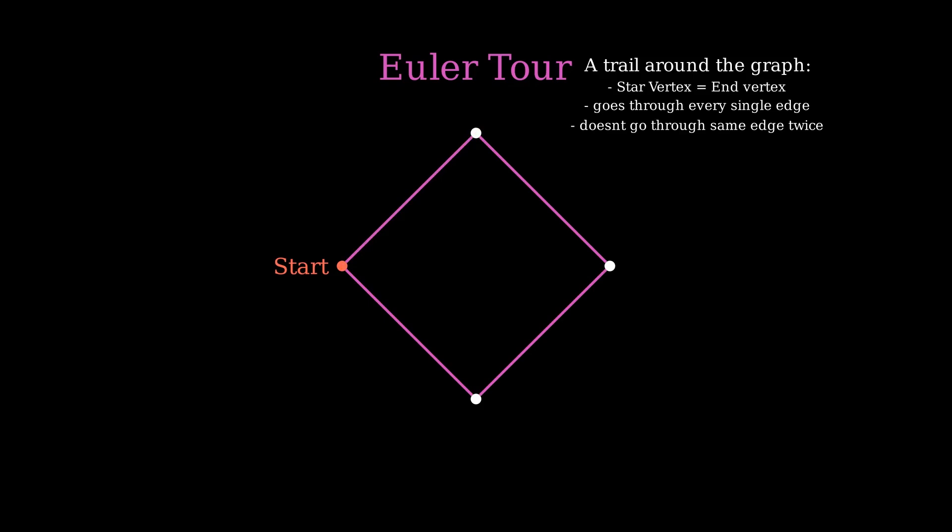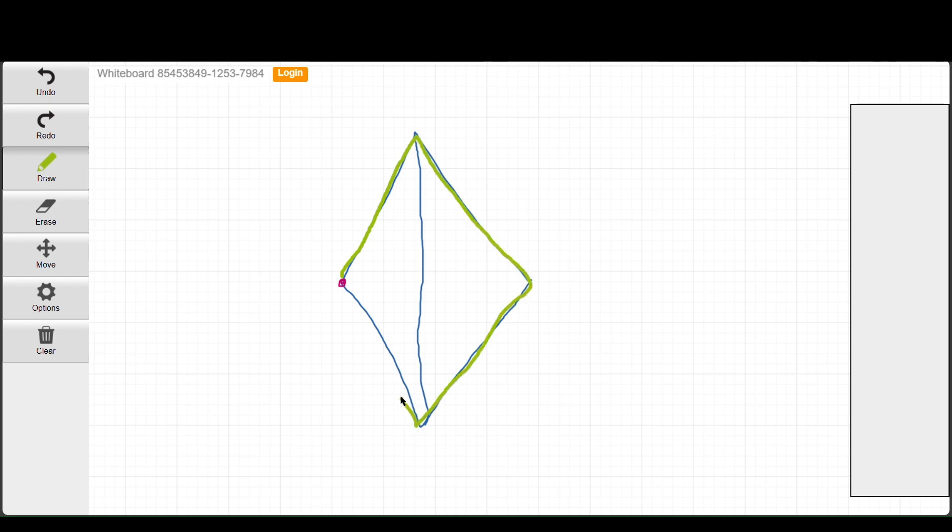Let's try adding a line through the middle like this. Now you try to find the Euler Tour. Now I don't know about you guys, but I just can't seem to find the Euler Tour here. But don't worry, because in some figures it is actually not possible, and that is because of one simple reason.